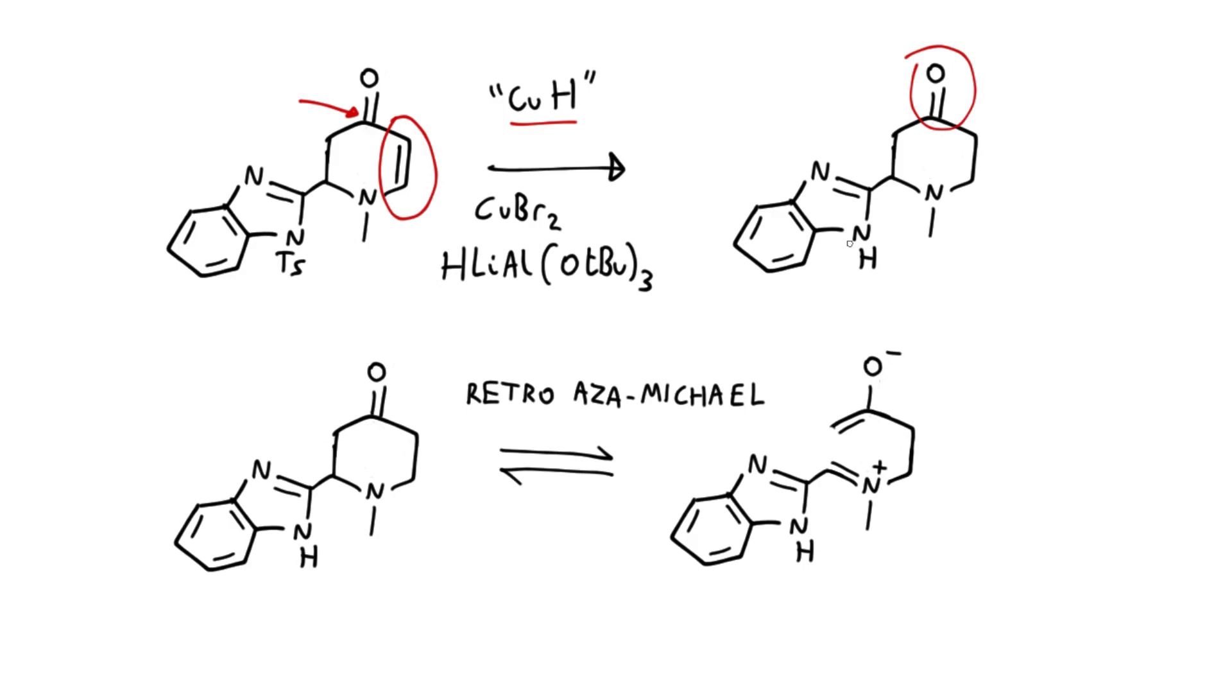And for the next step, it's important to note that whilst we have set up a stereocenter in this substrate, it is actually able to racemize. So perhaps due to some stabilization by the benzimidazole, the nitrogen is actually able to break this neighboring bond and form this ring-opened intermediate.